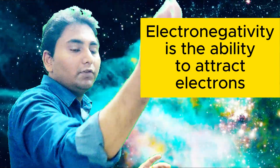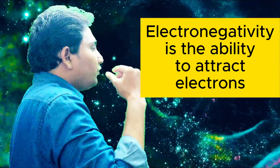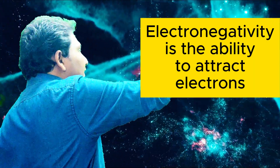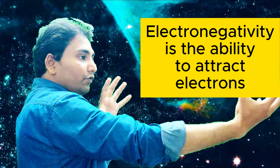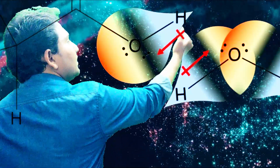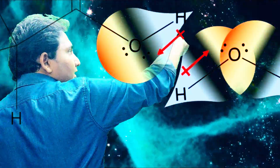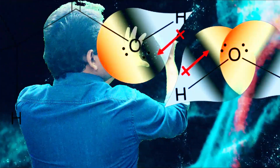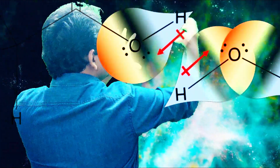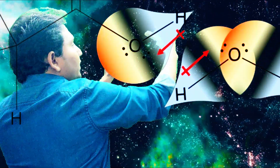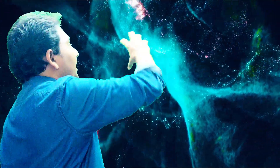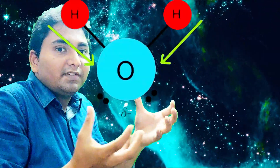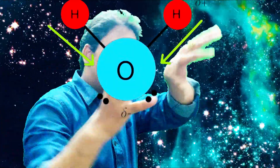Electronegativity is the ability to attract electrons when two atoms are bonded — it attracts electrons from the electron cloud between the two atoms. Oxygen, being more electronegative, attracts electrons to its side, so more electrons are dispersed toward oxygen.